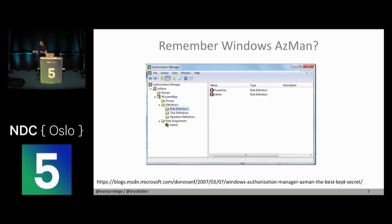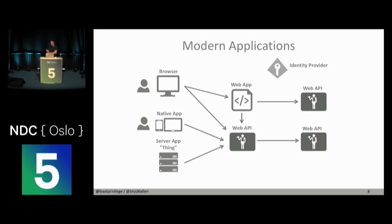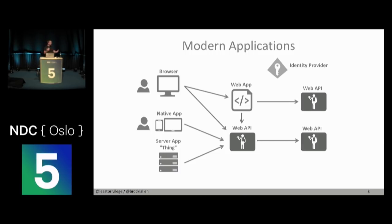When we thought about how Policy Server should work, my idea was: I want something like AzMan, but teleported to modern application design — not dependent on Active Directory, using modern protocols like OpenID Connect and OAuth, with claims-based identity, and support for an arbitrary identity system. Many vendors try to sell you identity and access control software where you're locked into the whole stack — your users and permissions must all be managed by them. What I want is the ability to choose an arbitrary identity system and layer your authorization on top of that.